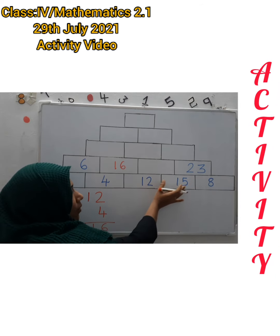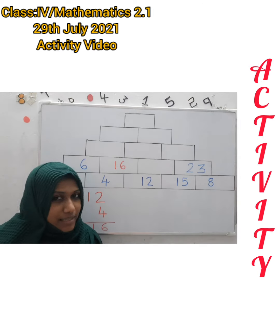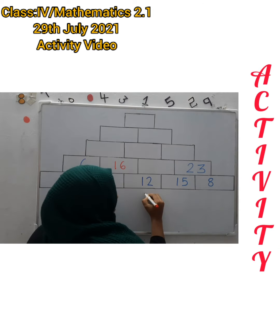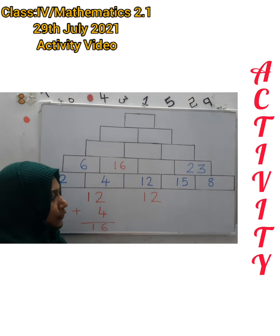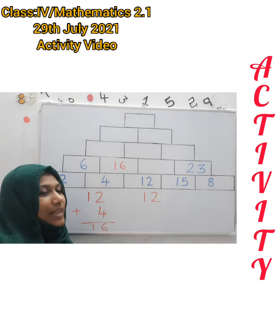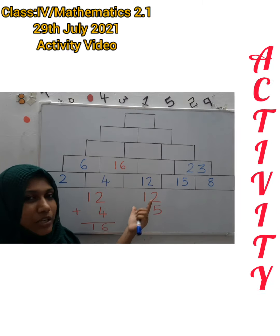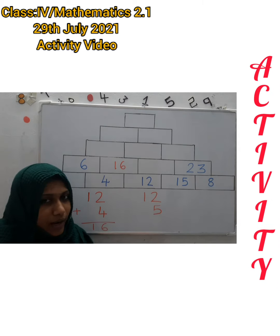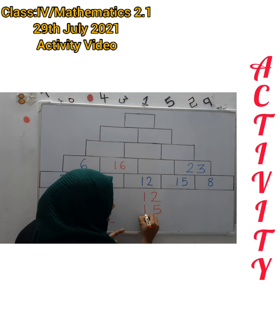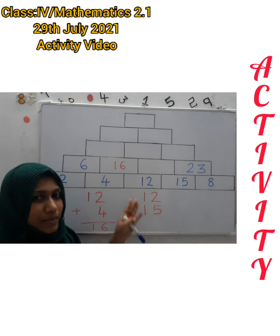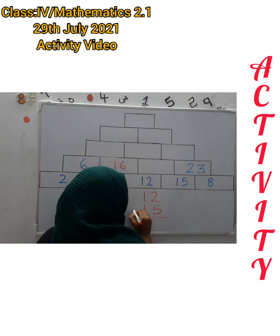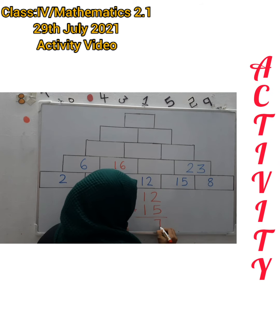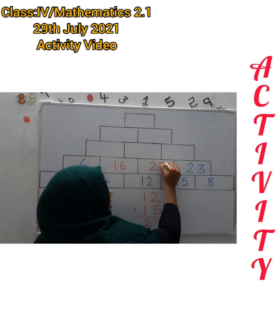Then we have 12 and 15 — both are 2-digit numbers. First write 12, then 15. The 5 goes below the 2; we arrange them so the 1's places are in one column and the 10's places are in the 2nd column. Then we add: 2 plus 5 is 7, 1 plus 1 is 2. The answer is 27.